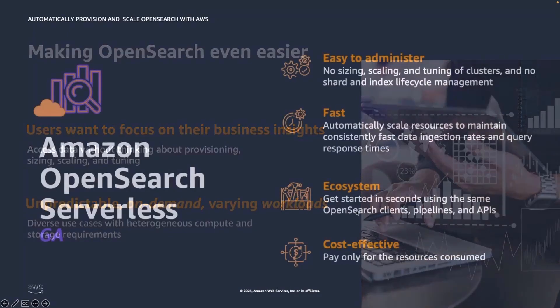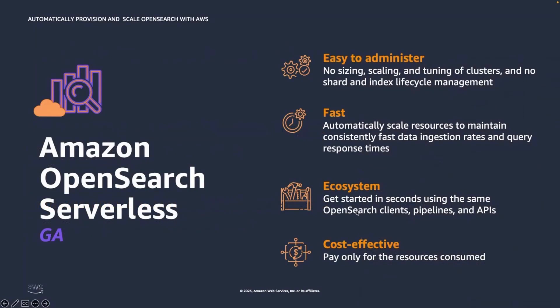This is why we recently introduced Amazon OpenSearch Serverless, which is a new serverless option for Amazon OpenSearch Service that automatically provisions and scales the underlying resources to deliver fast data ingestion and query response for the most demanding and unpredictable workloads. Serverless removes the operational complexities for provisioning, configuring, and tuning your OpenSearch clusters. With OpenSearch Serverless, you can easily and quickly start with the service to search and analyze petabytes of data without worrying about the underlying infrastructure and data management.